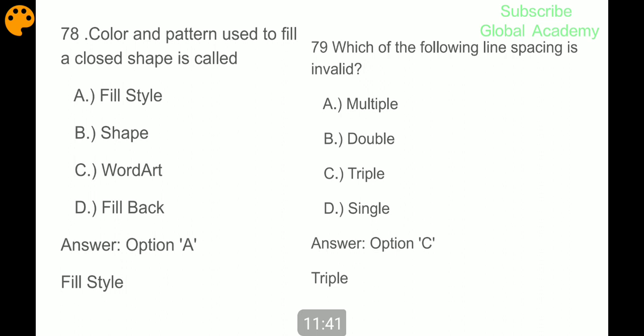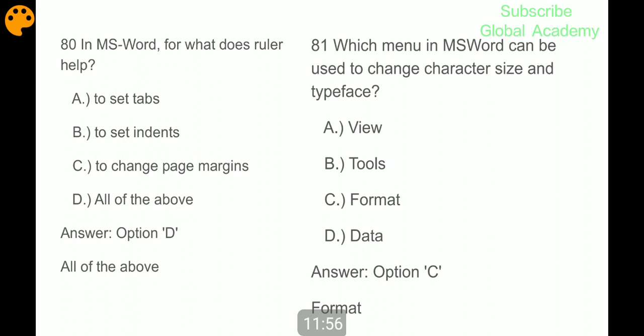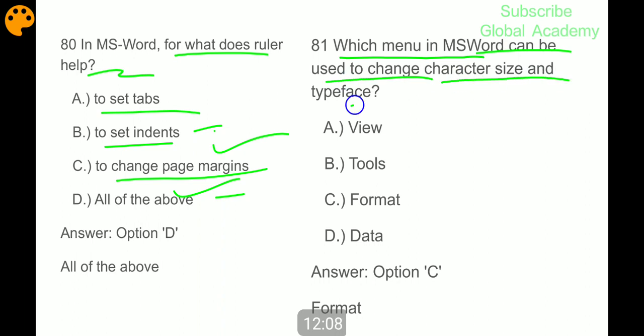Color and pattern used to fill a closed shape is called fill type, A part. Which of the following line spacing is invalid? Triple. In MS Word, what does ruler help with? To set tabs, to set indents, to change page margins - all the above. Which menu in MS Word can be used to change character size and typeface? Format.